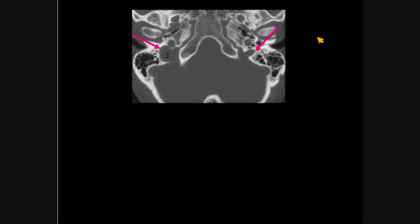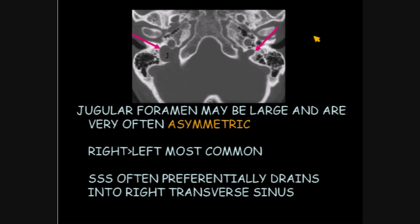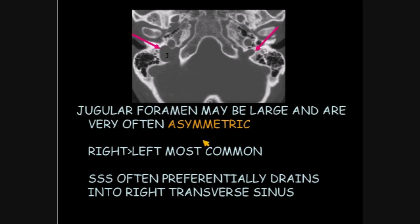The jugular foramen may be large and are very often asymmetric, even markedly so. Right is much more commonly large than the left. That's because the superior sagittal sinus preferentially drains into the right transverse sinus — that's why the right jugular vein is larger than the left, most of the time, but not always.